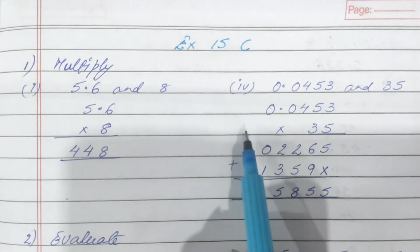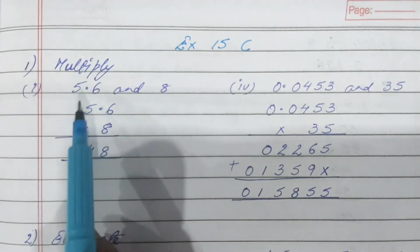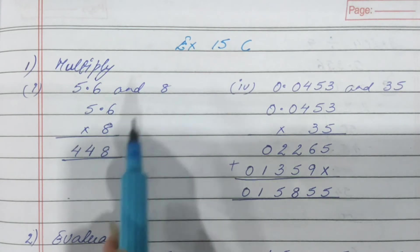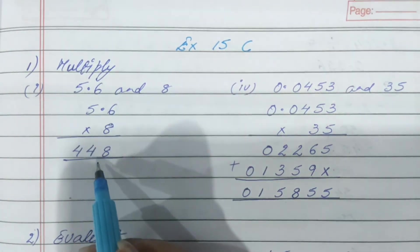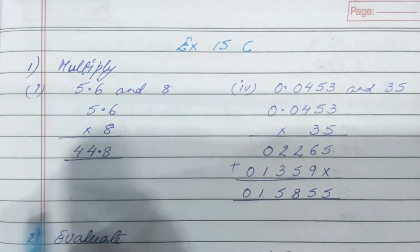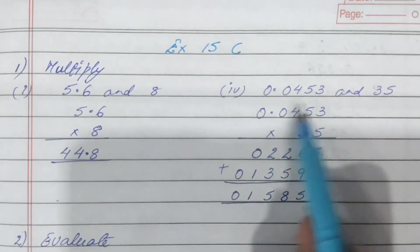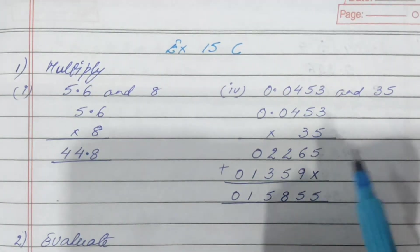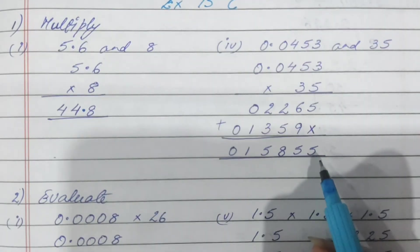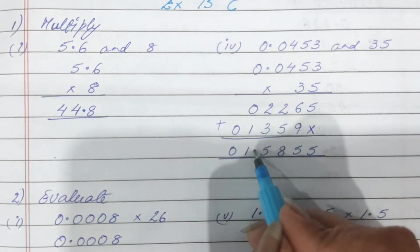Coming to exercise 15C. I have taken a few questions. 5.6 multiplied by 8 — do normal multiplication, count the number of decimal places — one place — so count one place from the units and put the decimal. For the fourth sub-part, do normal multiplication. How many decimal places are there? 1, 2, 3, 4. In the answer also count 4 places from the units — 1, 2, 3, 4 — and put the decimal.